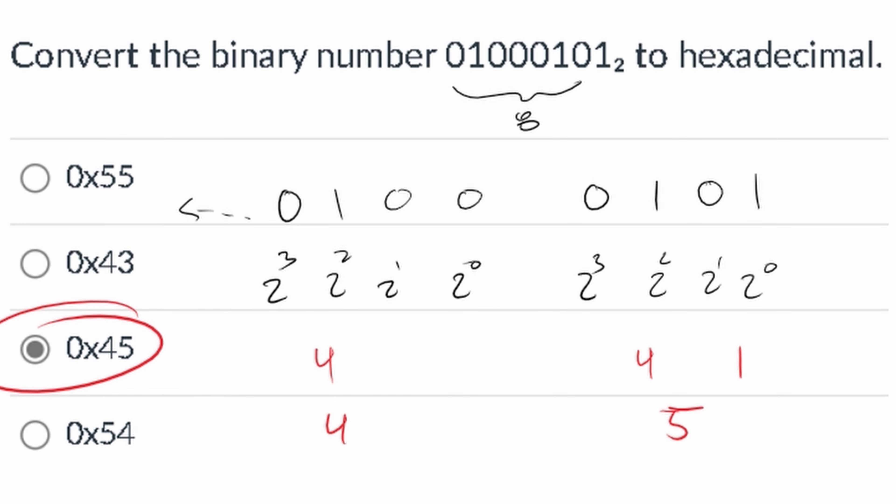So our answer is 0x45. The 0x in front just notes that it's hexadecimal. So if you see this, it means hexadecimal. That's how we convert from binary to hexadecimal.